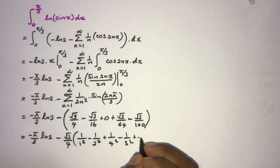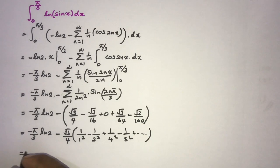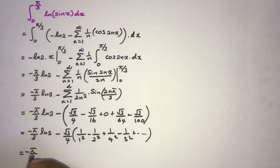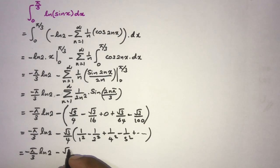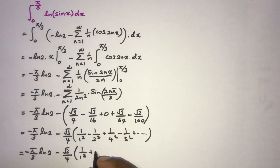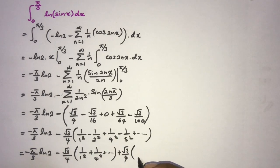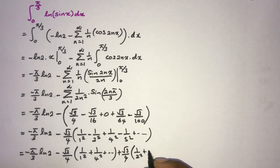As the next step, we write minus (π/3) ln(2) minus (√3/4) times the sub-series (1/1² + 1/4² + ...) plus (√3/4) times the sub-series (1/2² + 1/5² + ...).